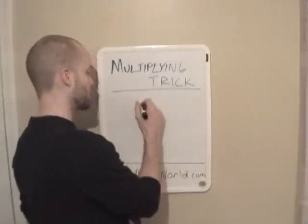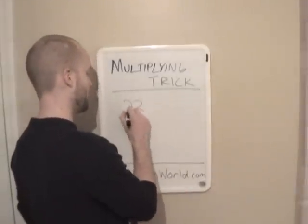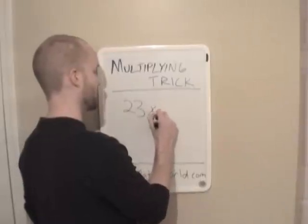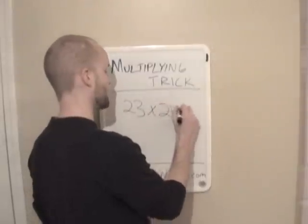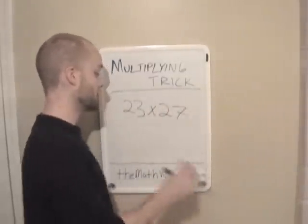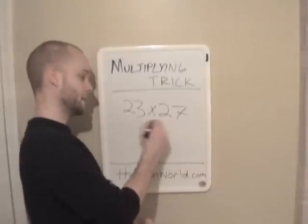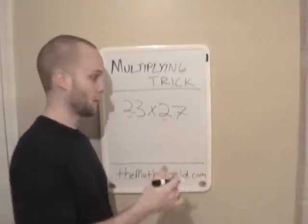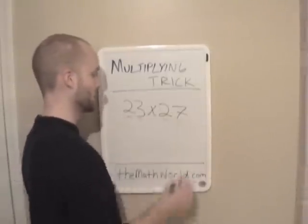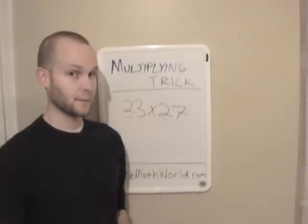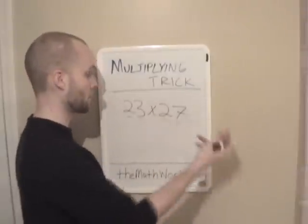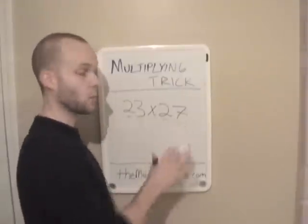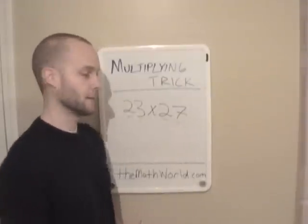So for example, 23 times 27. As you can see here, the tens digits are the same — they're both 2 — and the ones digits add up to 10. So 3 plus 7 is 10. This is what we're going to be looking at today.